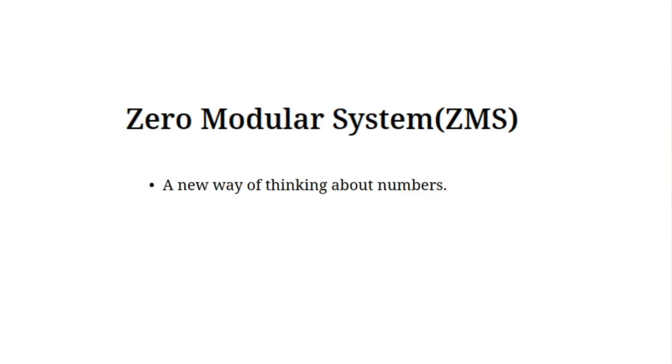Today we're introducing a brand new way of thinking about numbers, something that completely redefines division and modular arithmetic. This is called the zero modular system, or ZMS for short. But before we dive into how it works, let's talk about the big problem with traditional modular arithmetic and why we needed ZMS in the first place.